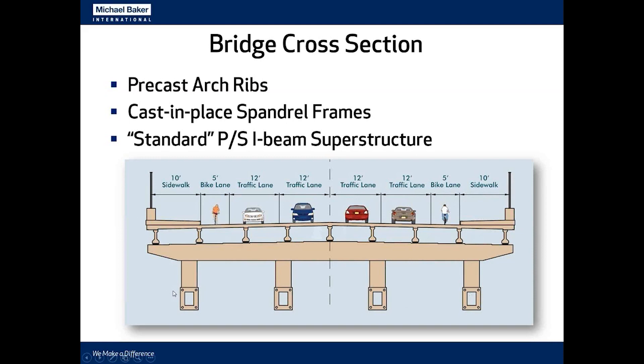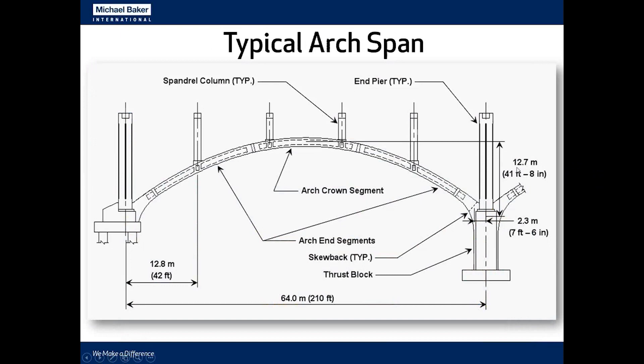Here's the cross-section of the bridge. Like the original structure, there are four arch ribs, but in the replacement structure these arch ribs are precast concrete rather than cast-in-place. Because of the vertical curve on the bridge, all spandrel columns are slightly different heights, so precast spandrel columns would not be efficient. They're cast in place over the arch ribs. The superstructure is a standard Ohio precast concrete I-beam superstructure supporting four traffic lanes, two bike lanes, and wide sidewalks on either side.